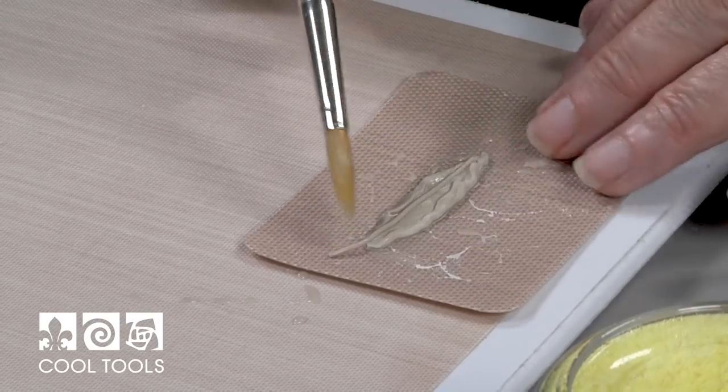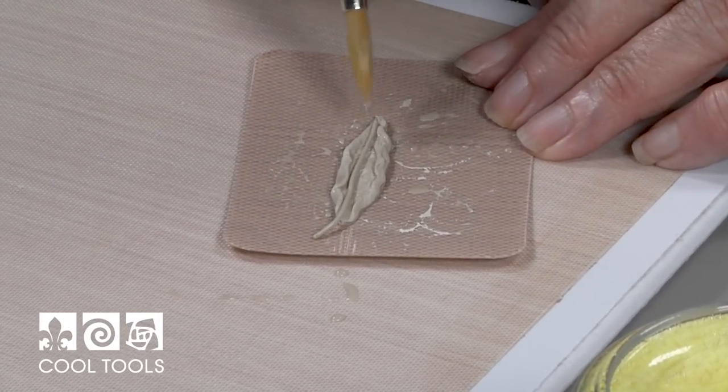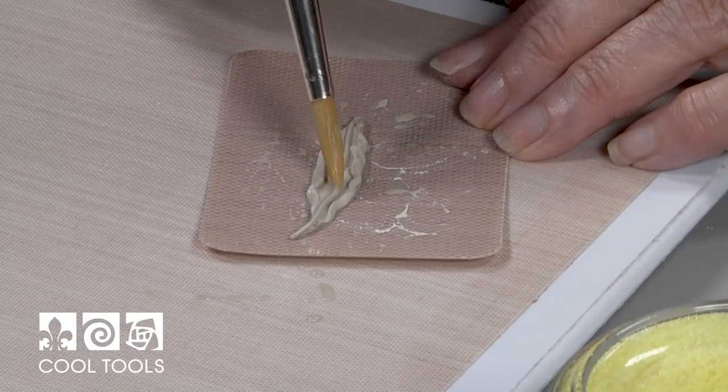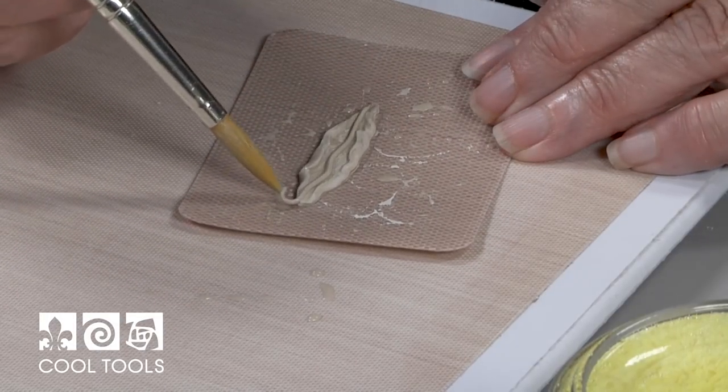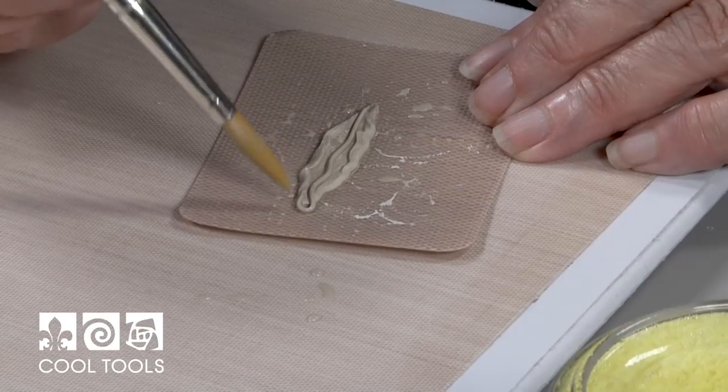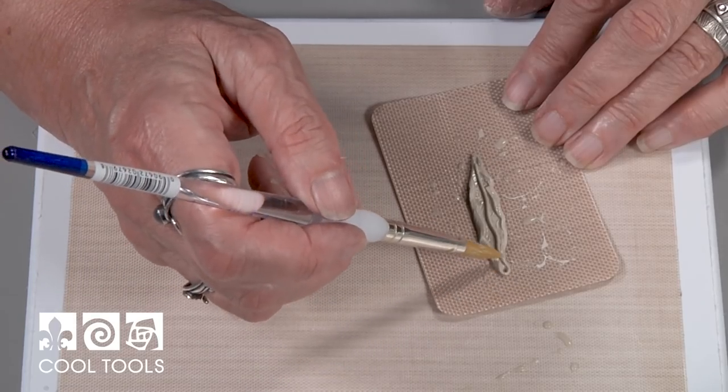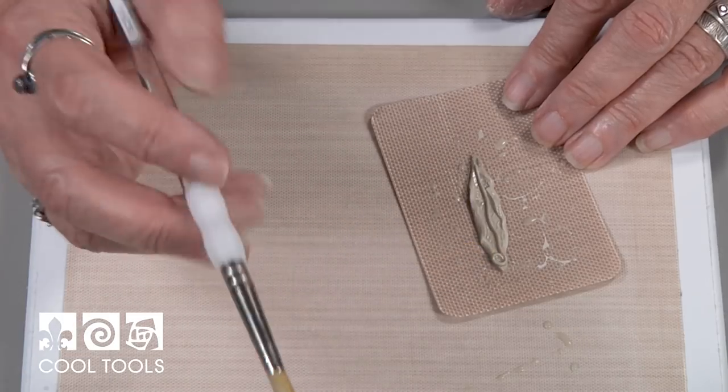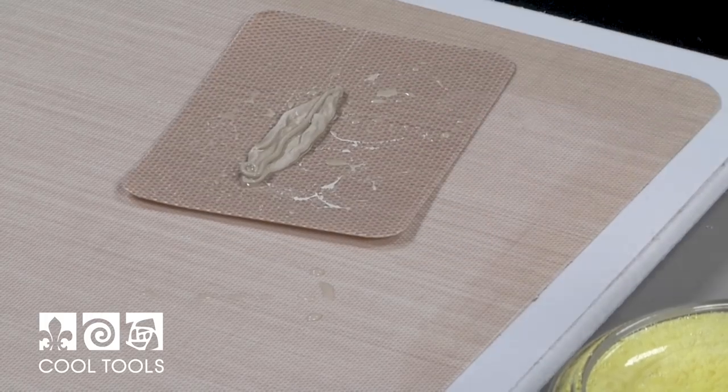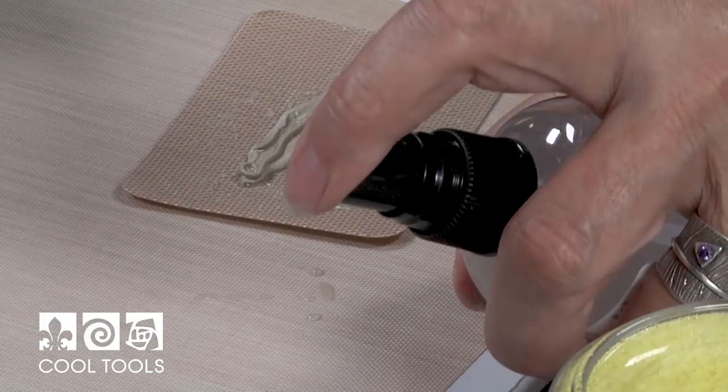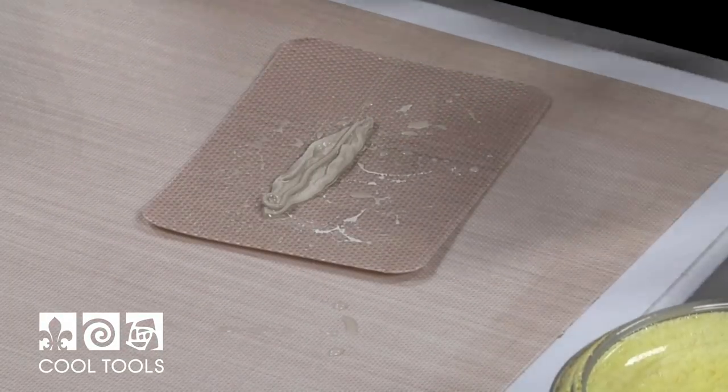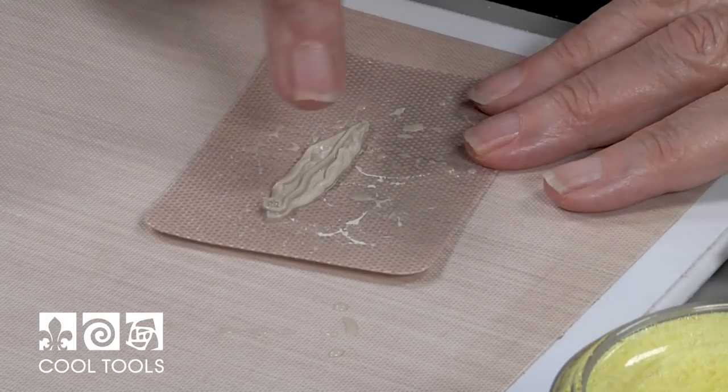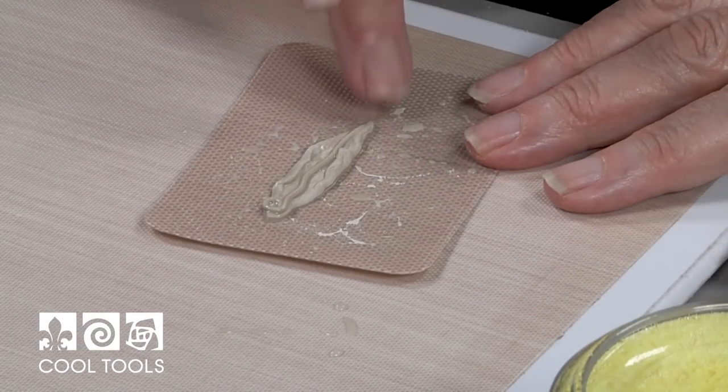Sometimes it cooperates and sometimes it doesn't but you can make it do what you want if you're gentle. And I'm just going to put a little curve in it and a little spiral on the end. Okay. Now I'm going to just get a little lube on my finger and lightly press that coil down.